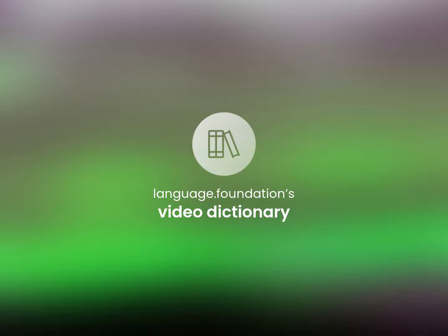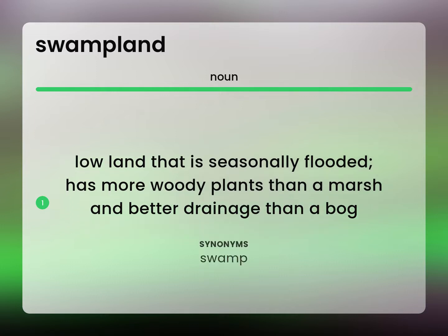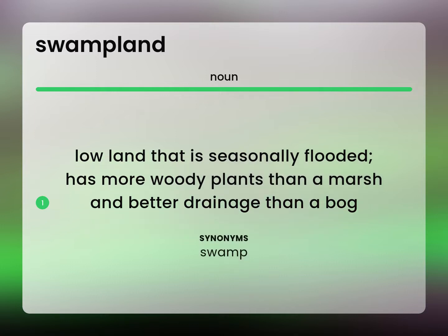Language Foundation's Video Dictionary, helping you achieve understanding. Low land that is seasonally flooded, has more woody plants than a marsh and better drainage than a bog. Swamp.